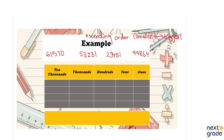Let's start putting the numbers in the place value chart. I'm placing 61,570 — so that's 0, 7, 5, 1, 6. Next number is 53,231 — 1 is ones, 3 is tens, 2 is hundreds, 3 is thousands, 5 is ten-thousands. Then comes 23,451. We are placing all the numbers one by one in the place value chart.